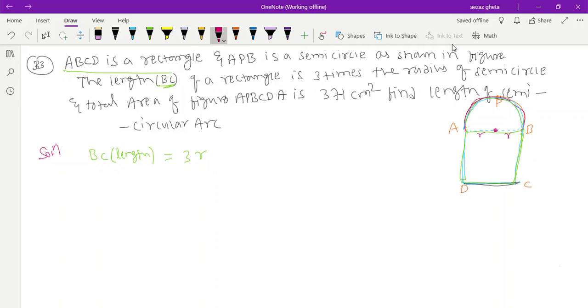The total area is given - the whole semicircle and rectangle area is given. Area of APBCDA equals area of semicircle plus area of rectangle. Area of semicircle is πr² - for semicircle it's half. Rectangle is length into breadth, so 1/2 × π × r² where π is 22/7.